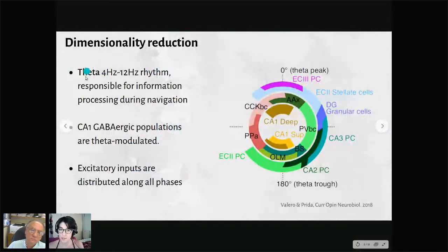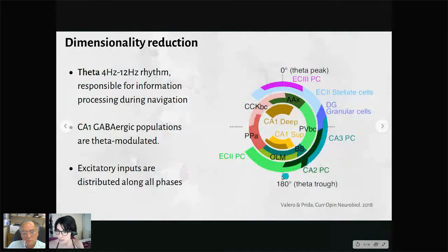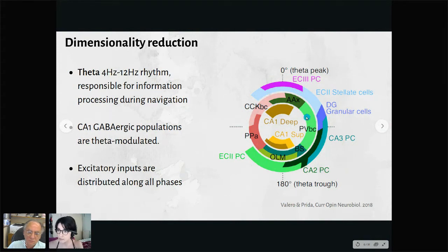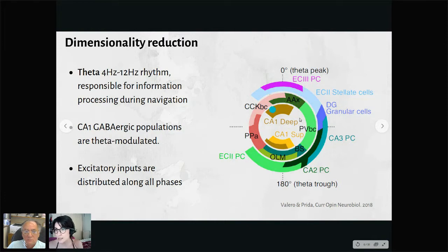During one of the most important hippocampal rhythms — the theta rhythm, a slow rhythm from 4 to 12 Hz responsible for information processing during navigation — both inhibitory and excitatory inputs are distributed along all phases. The outside ring represents excitation covering almost all theta phases from peak to trough, and the middle ring represents inhibition, also covering all theta phases. All these populations, both excitatory and inhibitory, are theta-modulated, meaning they fire preferentially at the same theta phase.